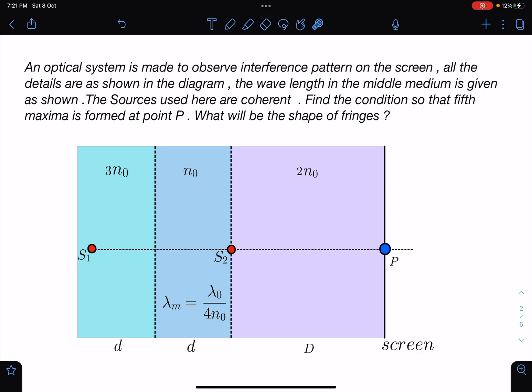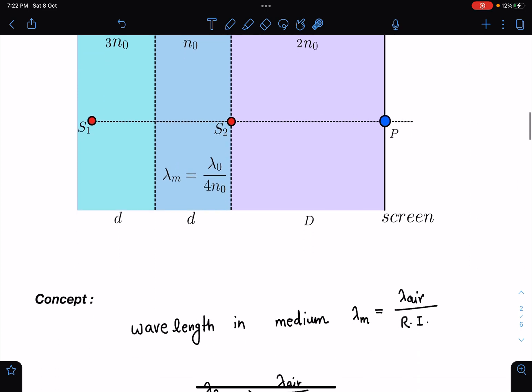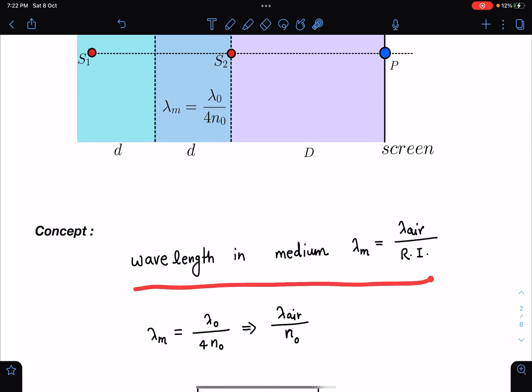So in this particular problem there are few points which are very important. One is what is the real meaning of wavelength in a medium, and the second part is what exactly is n lambda when we are writing in path difference or optical path length.